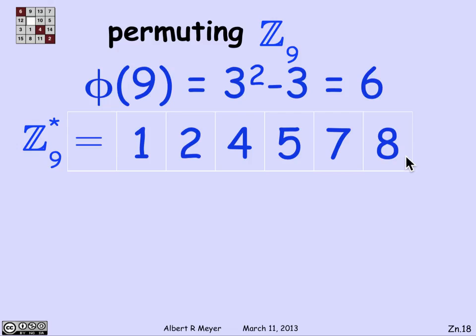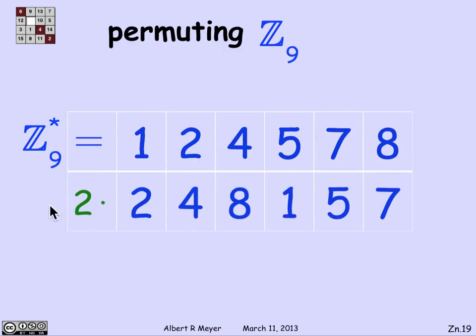Now, what happens, for example, if I multiply them all by 2? 2 is another good number. It's right here. That's in Z_n star. And multiplying them by 2, well, let's check. 2 times 1 is 2. 2 times 2 is 4. 2 times 4 is 8. 2 times 5 is 1, because it's 10 with a remainder of 1. 2 times 7 is 14, translates into 5. 2 times 8 is 16. Mod 9 translates into 7. And as claimed, look at this. Here's 2, 4, 8, 1, 5, 7. It's the same numbers as 1, 2, 4, 5, 7, 8, just in a different order.